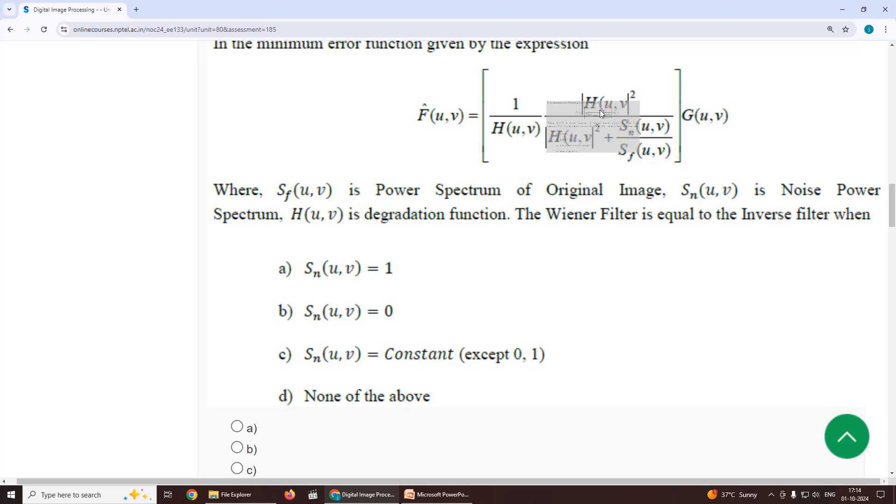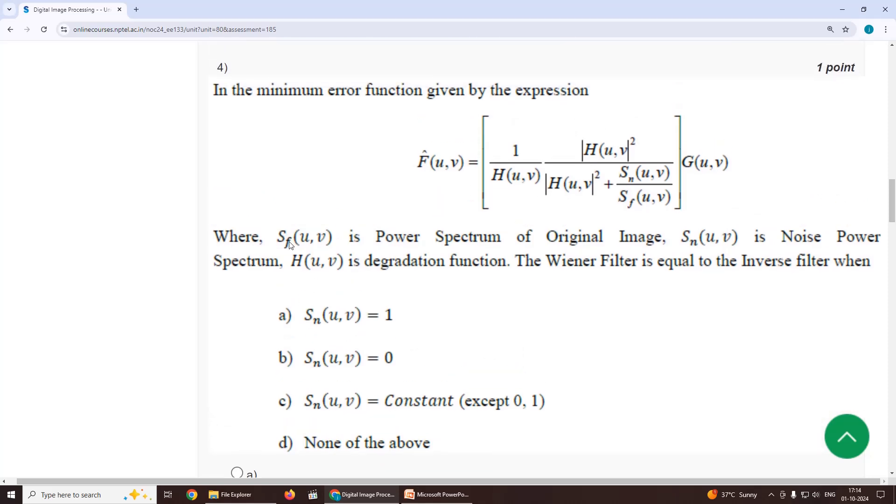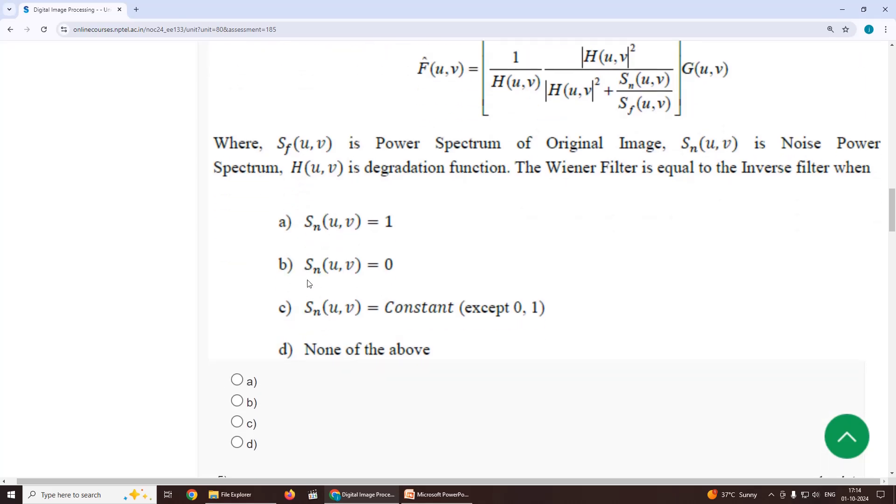And this term, H(u,v) magnitude cancels, we get G(u,v) by H(u,v), which is inverse function, which is inverse filter. So the answer is, our suggestion for the fourth is option B, noise power spectral density equal to zero.